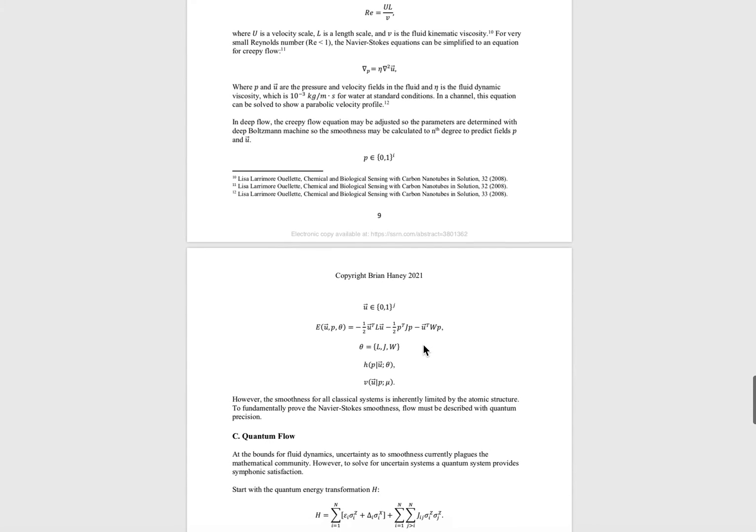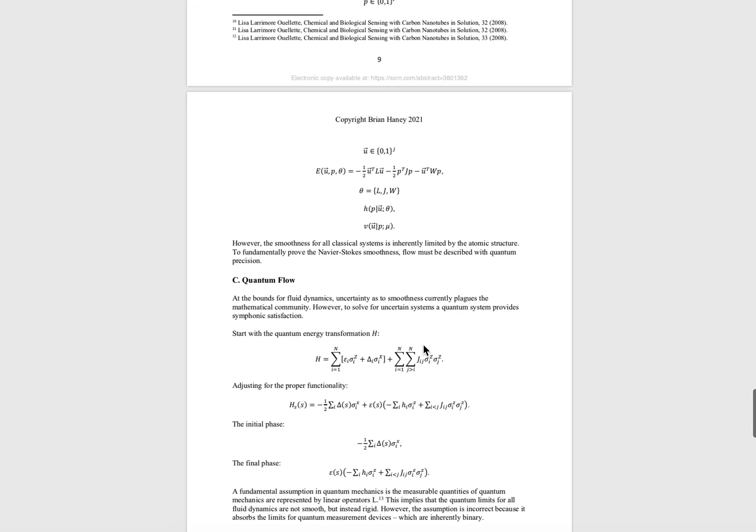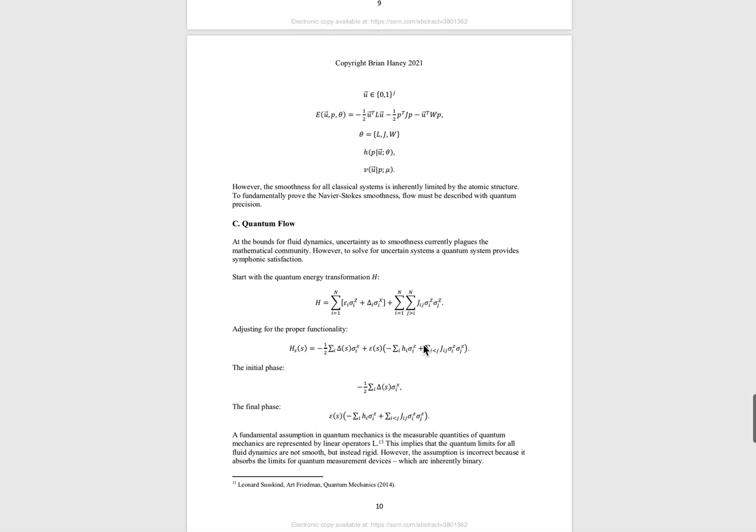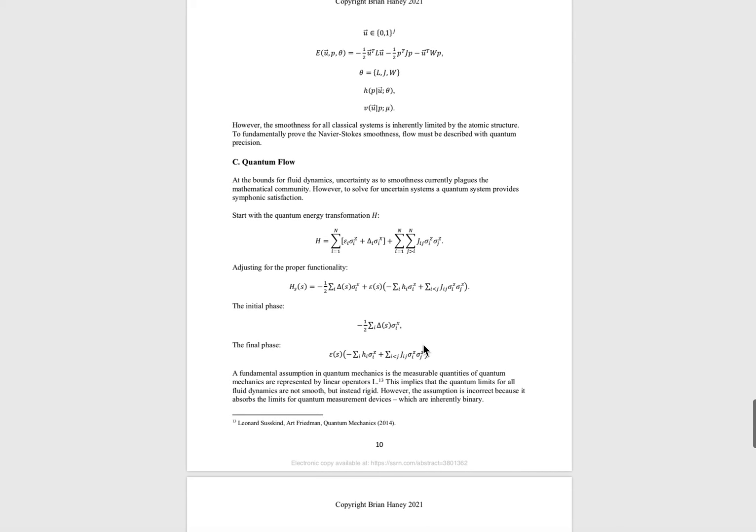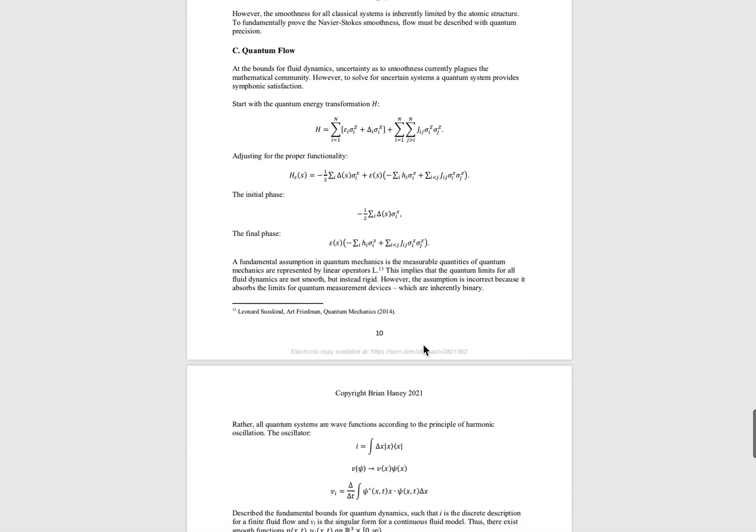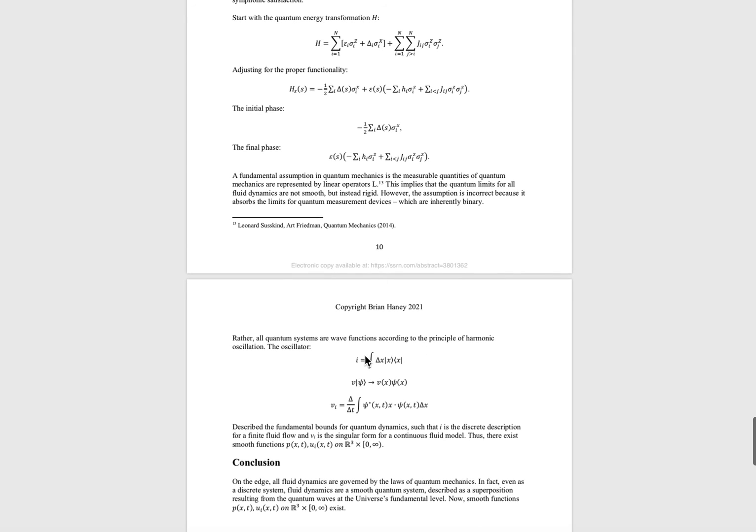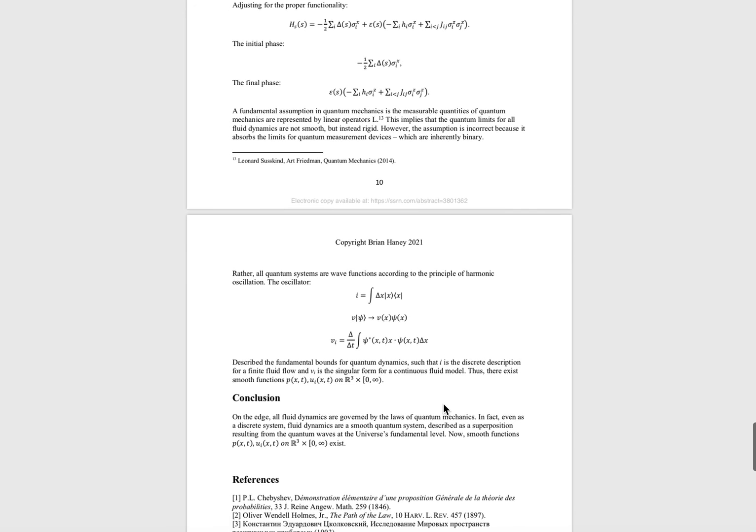The final element to the proof is describing the flow matrix using quantum mechanics. Fundamentally, all matter, all energy, everything is smooth. We started by describing our system using a Hamiltonian measurement function, which transforms the classical state space into a quantum energy function. Finally, we used a quantum oscillator to describe the flow for both discrete systems and dynamic or continuous systems. Thus, flow is fundamentally smooth.